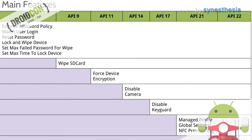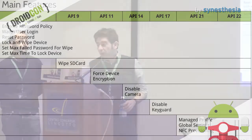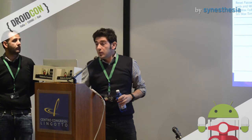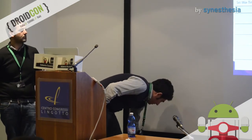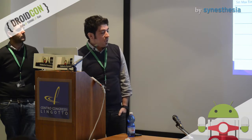The main Device Administration API features by version: API 8 covers mainly password policies, device lock, and device wipe. Later additions include SD card wipe and forced device encryption. From API 14, we can disable the camera. From API 17, we can disable the key guard — the lock screen widget. From API 21, we have the managed profile, NFC provisioning, modifying global settings, and installing certificate authority certificates. From API 22, you can disable the wipe factory reset protection.